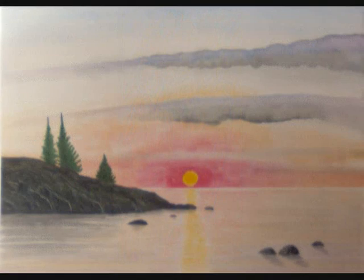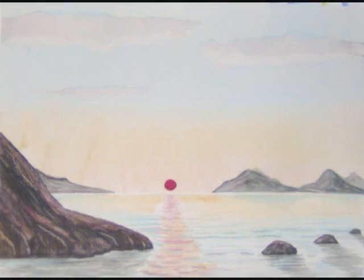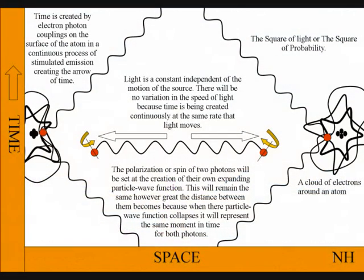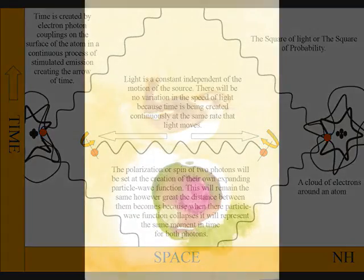Because space-time is expanding at the same rate that light moves, the expansion of light between the atoms will always be a universal constant, independent of the motion of the source. This can also explain why light is so beautiful when it strikes an object.